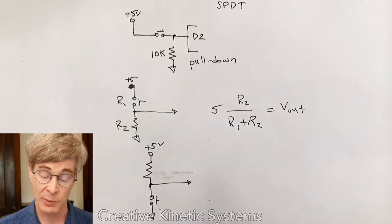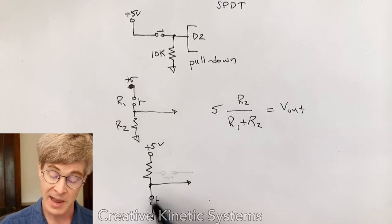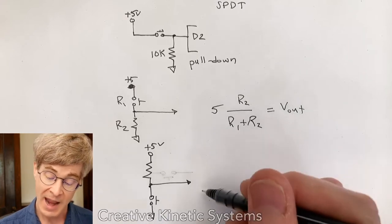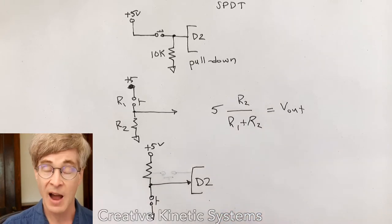it works perfectly fine, but we have an opposite logic. Now when the switch is unactuated, when it's open, not pressed, then no current can flow to ground, and then the Arduino input here will achieve the five volt supply voltage.